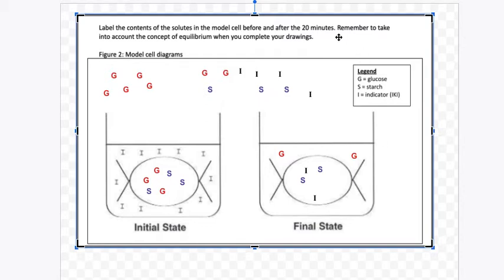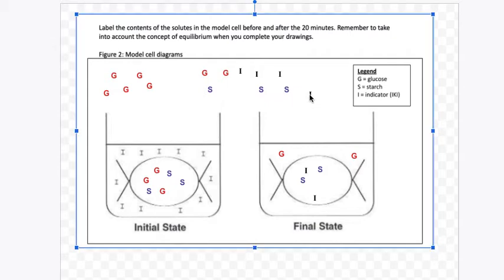In the instructions for this question, it says remember to take into account the concept of equilibrium when you complete your drawings. So that's testing: do you understand that just because iodine can diffuse across the membrane, that doesn't mean that it's all going to go into the cell?